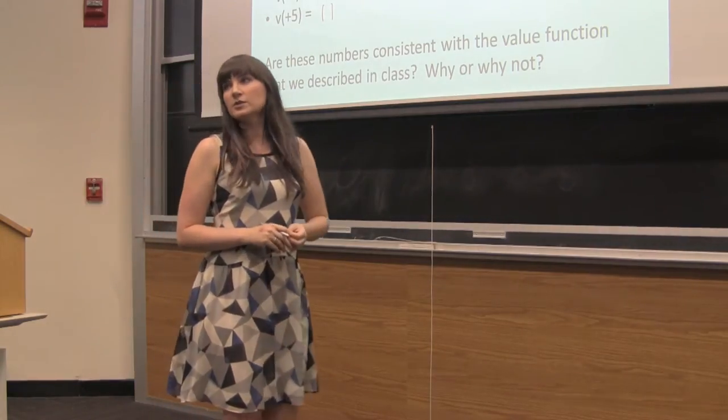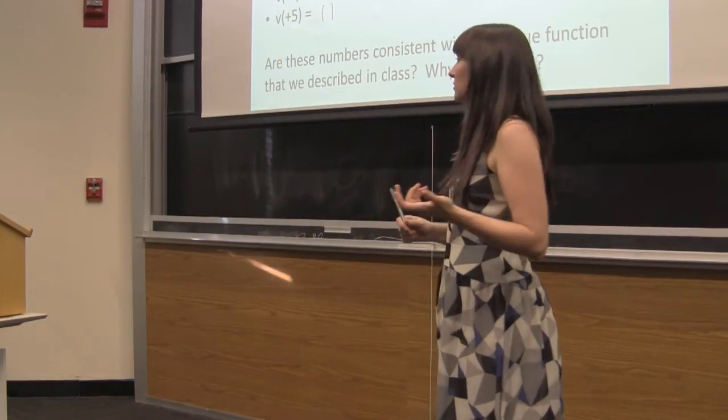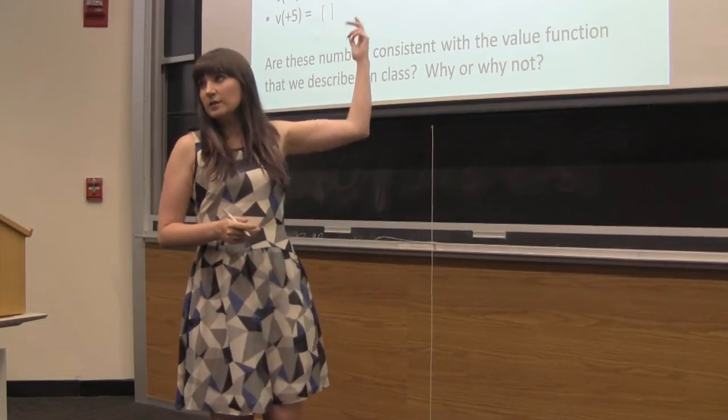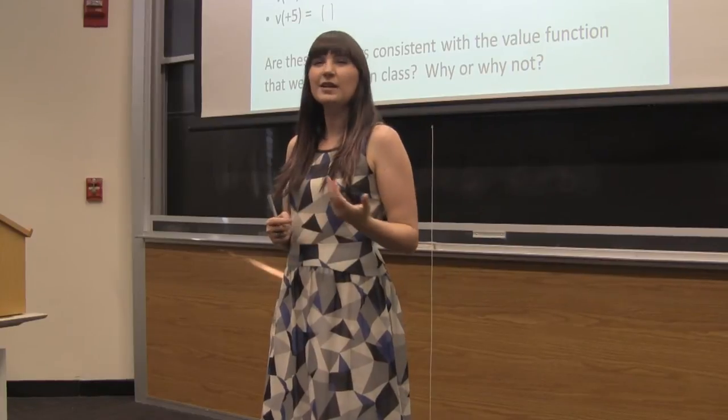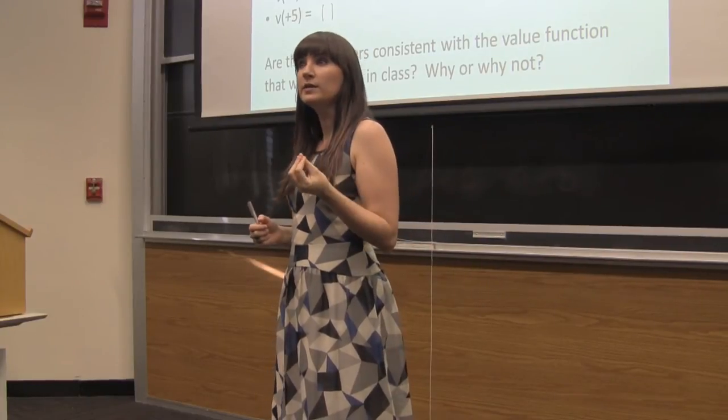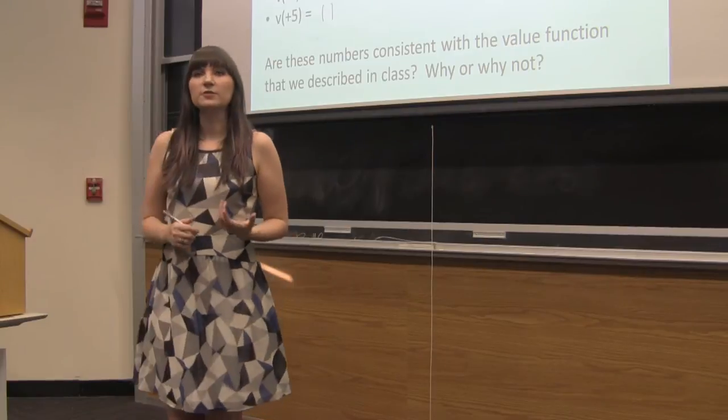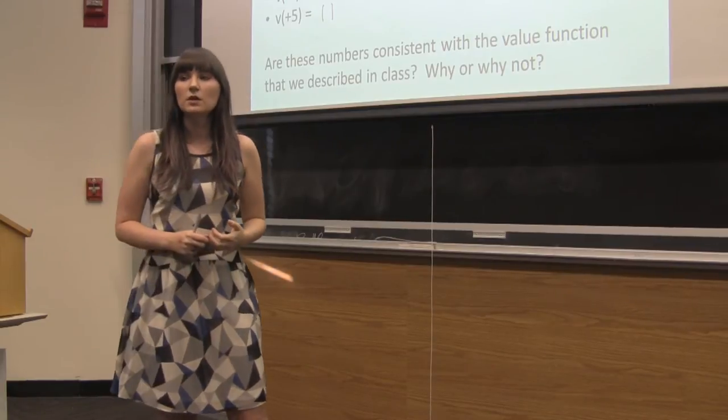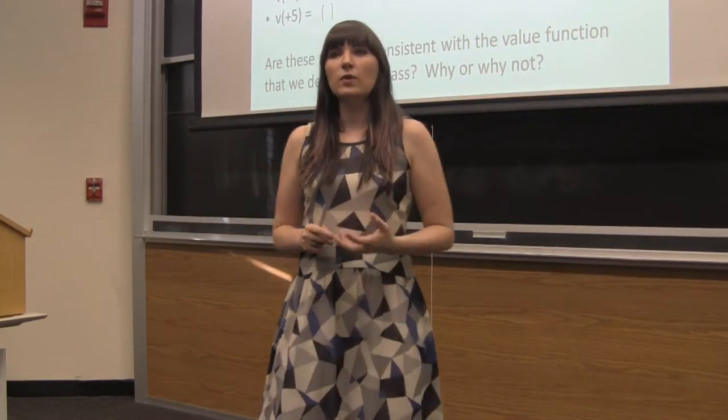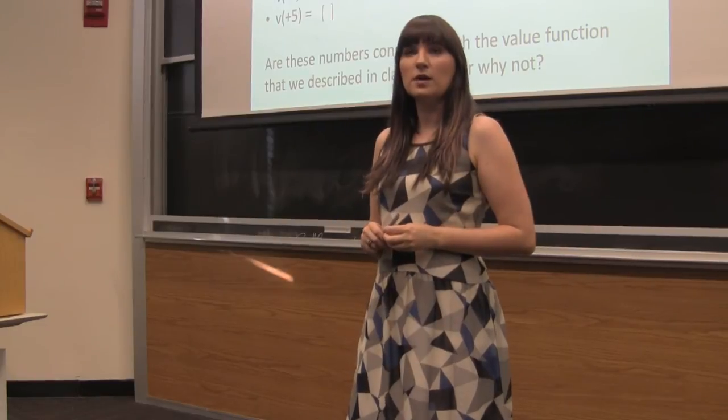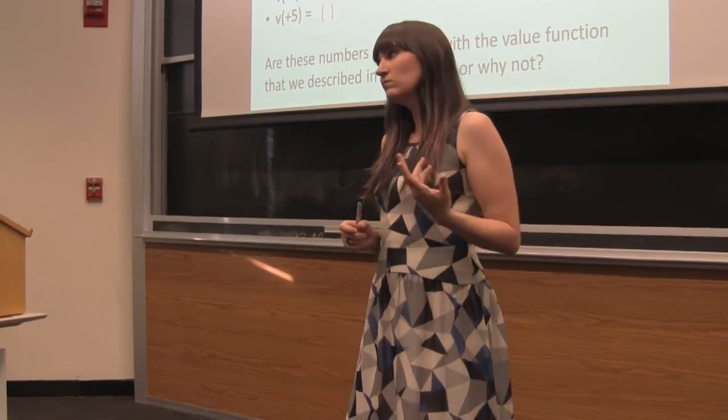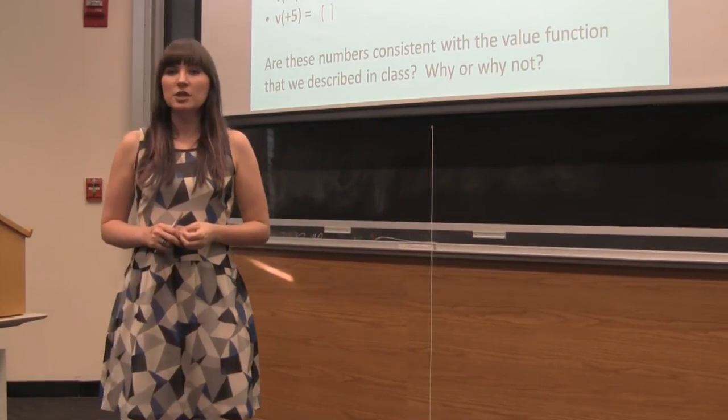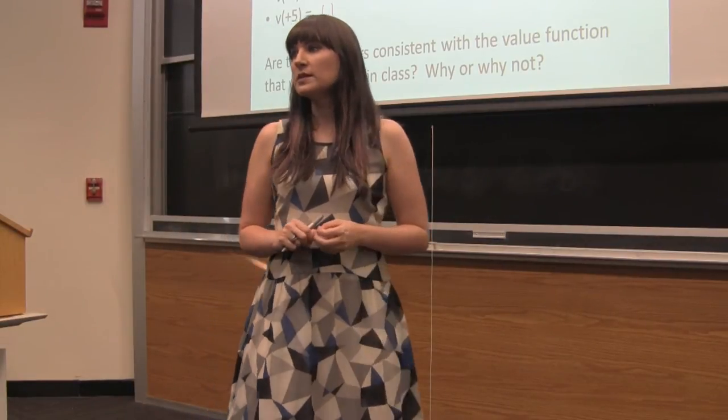So then the second part of the question is that are these numbers consistent with the value function that we described in class? Well, to some degree, if this is what you did, if these are the numbers that you filled in, it kind of has to be at least in one way, because you used what the value function looked like to even fill in these numbers in the first place, right? So we know that at least in this way, with the losses being felt twice as much as gains, by construction, this matches what we did in class.